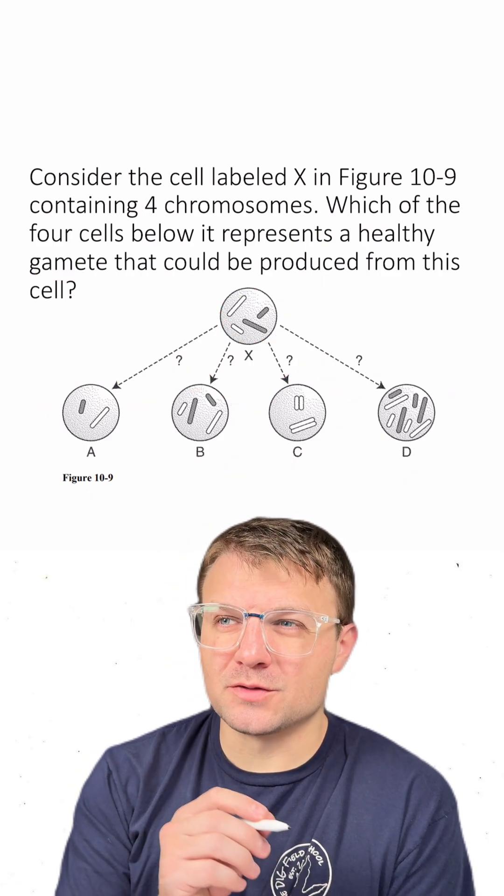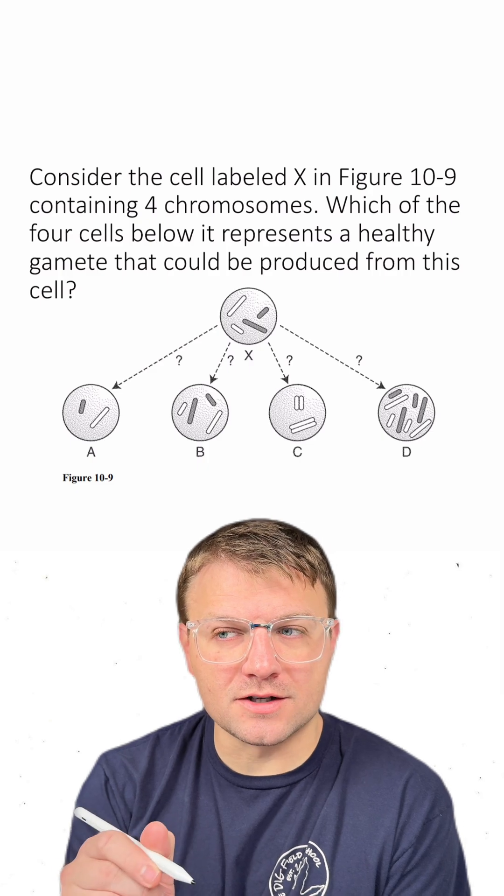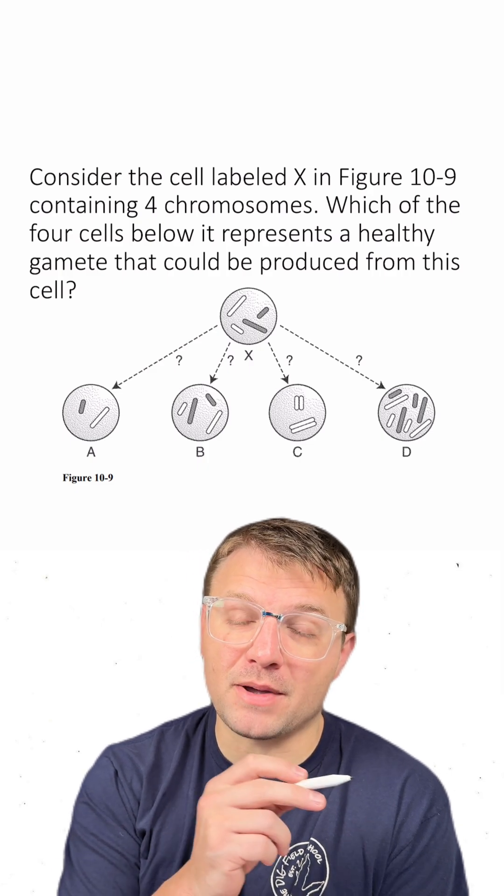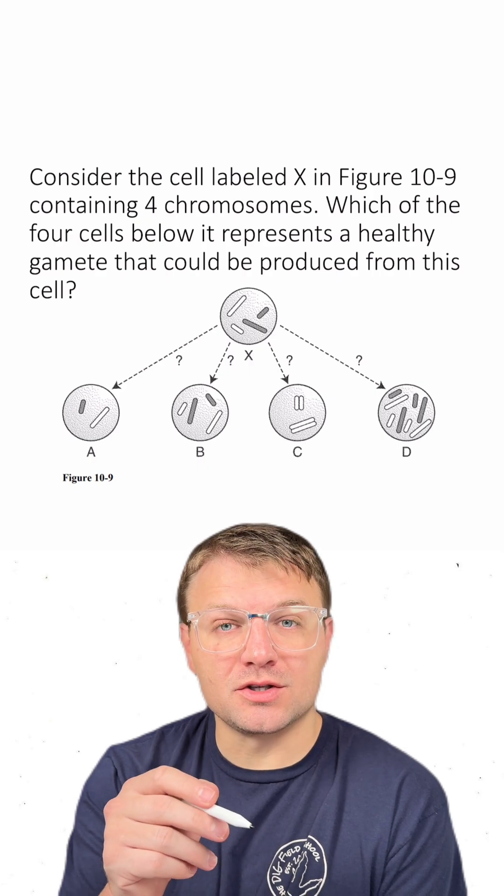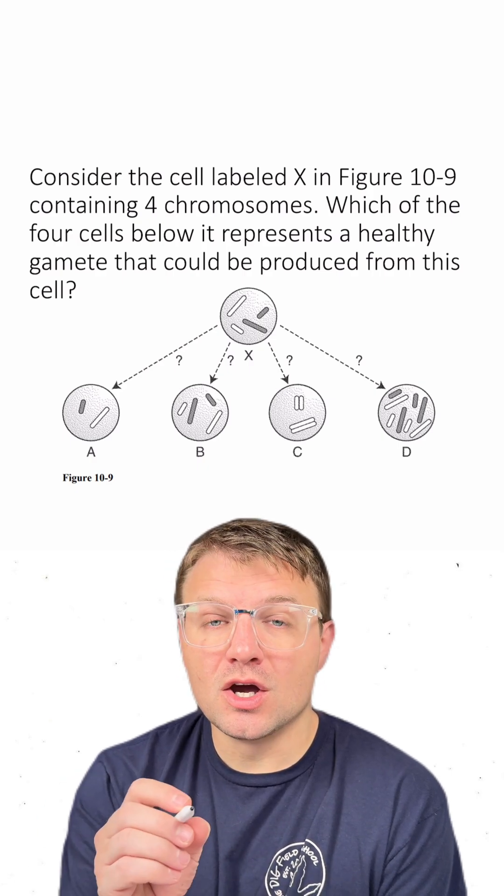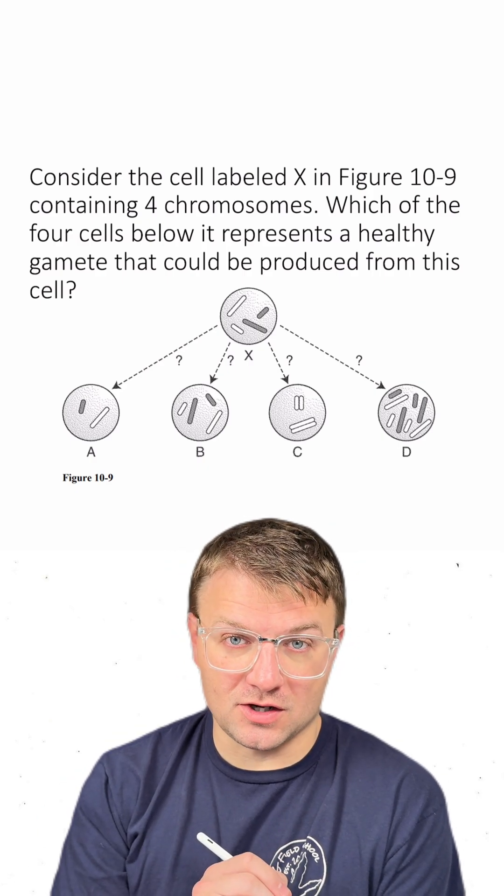Remember that mitosis produces genetically identical daughter cells with the same amount of chromosomes as the parent cell. Also remember that meiosis produces genetically different daughter cells with half the number of chromosomes.